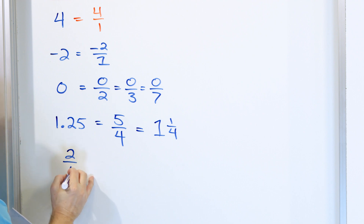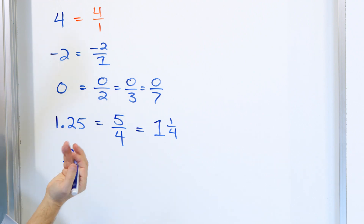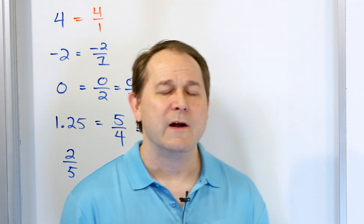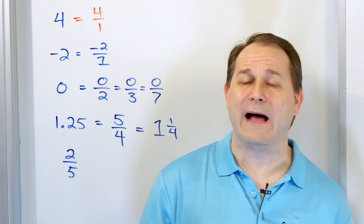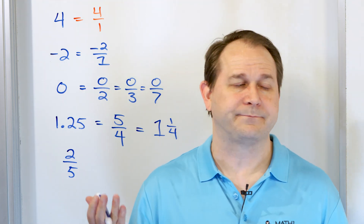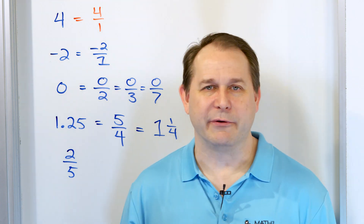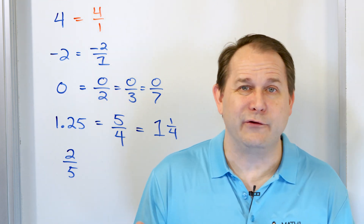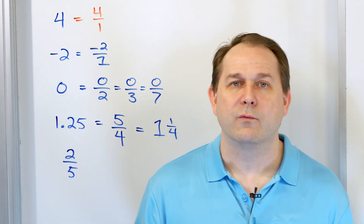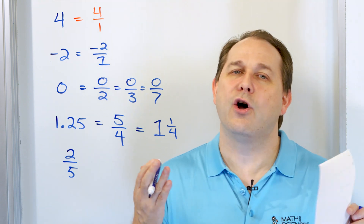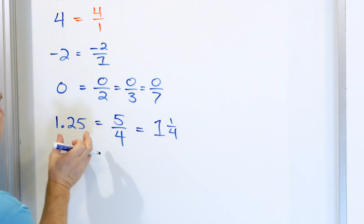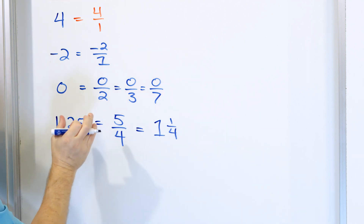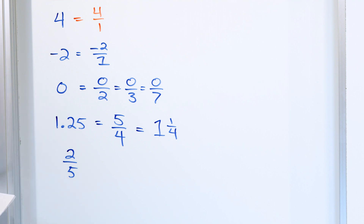Of course, any of the actual fractions that you know, like two-fifths, can be written as a fraction because it is a fraction. So all the fractions you know are rational. You can see you're thinking, what's left? Because all the positive whole numbers are rational, all the negative whole numbers are rational, zero is rational, all the fractions — one-fifth, two-sevenths, three-eighths — they're all rational, and all the decimals that stop and don't go on and on forever can always be written as a fraction. So they're all rational as well.